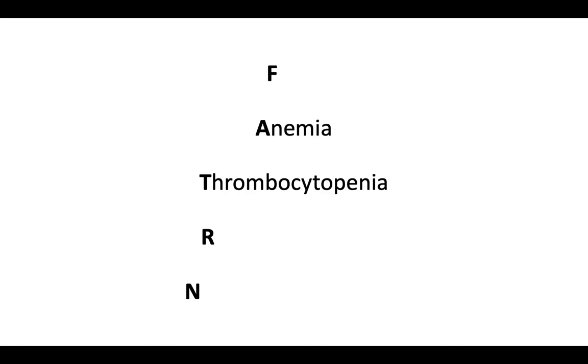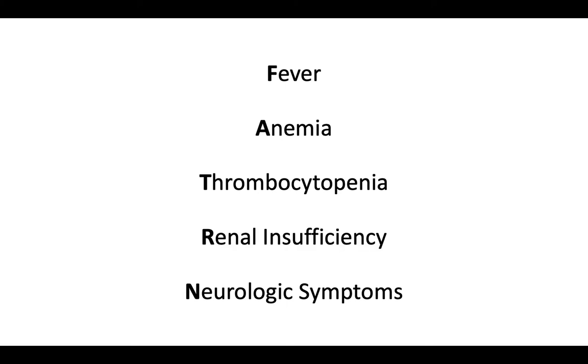Let's start with the clinical presentation. A mnemonic to help remember the clinical presentation is FATRN, which represents the classic pentad of findings. The two most common clinical findings are thrombocytopenia and anemia. Also common are neurologic symptoms — about 40% of patients experience major neurologic symptoms like seizure, stroke, and coma, and about 25% experience minor symptoms such as headache and confusion. Less commonly, presenting findings include fever, which occurs in about 10% of patients, and renal insufficiency, which is uncommon and, when present, mild. All five combined manifestations occur rarely in less than 5% of patients.